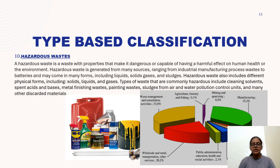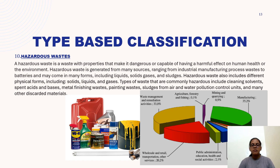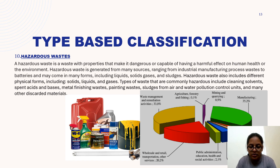In the type-based classification, we also have hazardous waste. Hazardous waste is waste with properties that make it dangerous or capable of having a harmful effect on human health or the environment. It is generated from many sources ranging from industrial manufacturing processes to batteries, and comes in different forms such as solids, liquids, and gases. Types commonly considered hazardous include cleaning solvents, spent acids and gases, metal finishing waste, painting waste sludges, and many other discarded materials. Here there is a pie chart which tells us about hazardous waste.